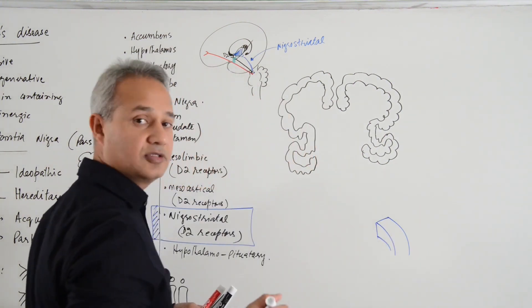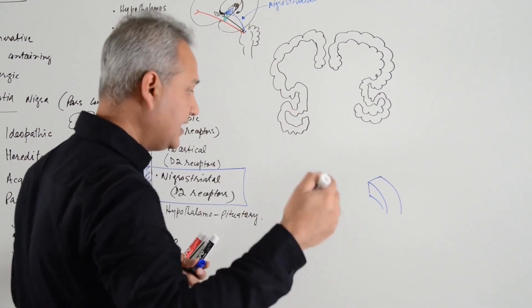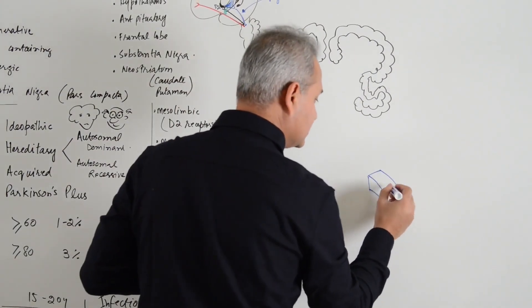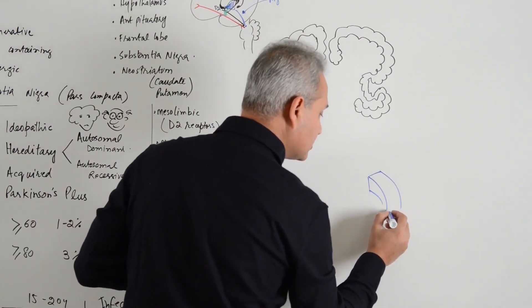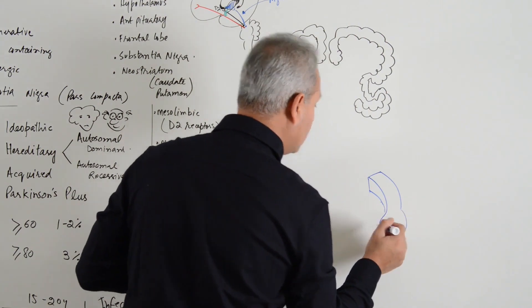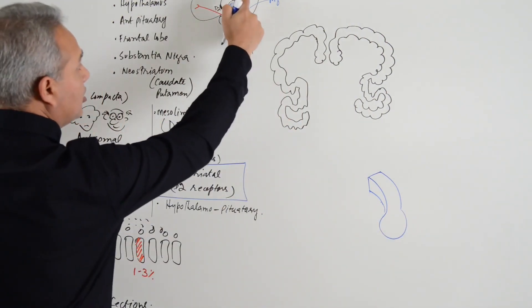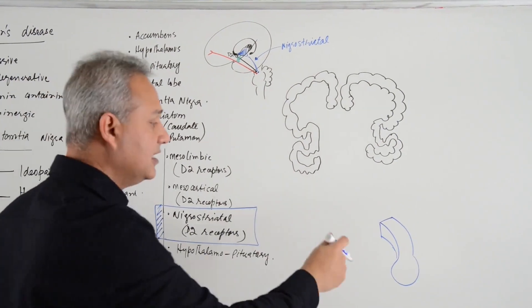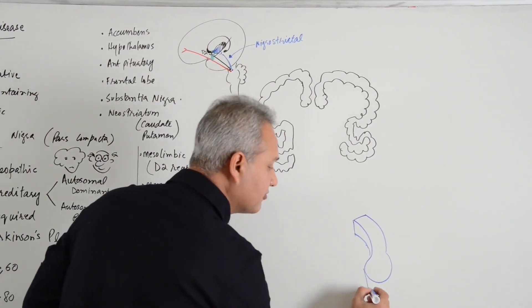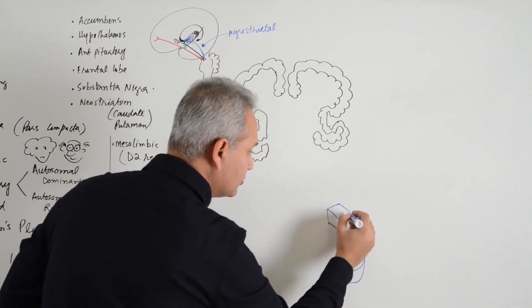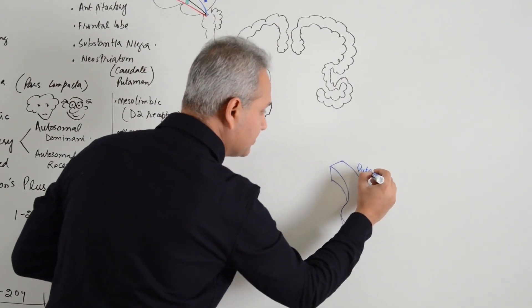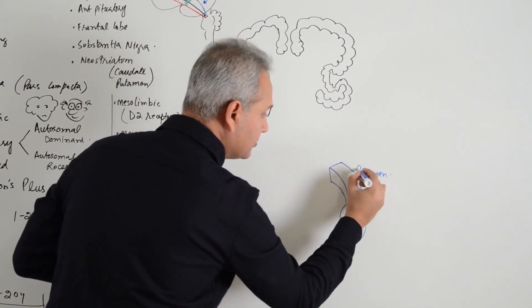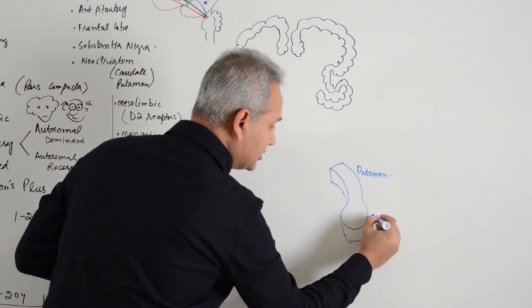Then I am just going to create the, this is the putamen. And I am going to connect caudate to it, although the caudate nucleus is a long nucleus with the tail. This is just a representation of the caudate nucleus. So putamen and caudate.